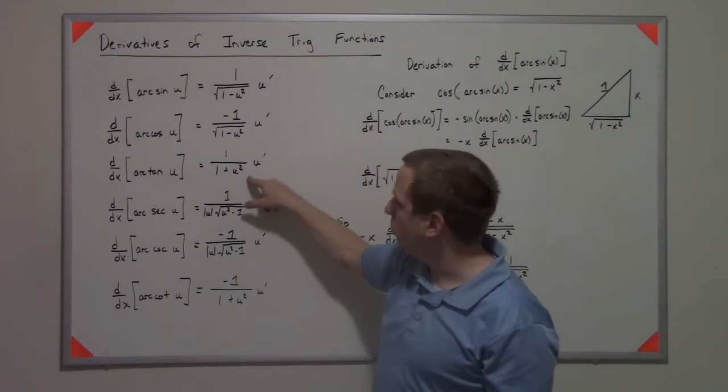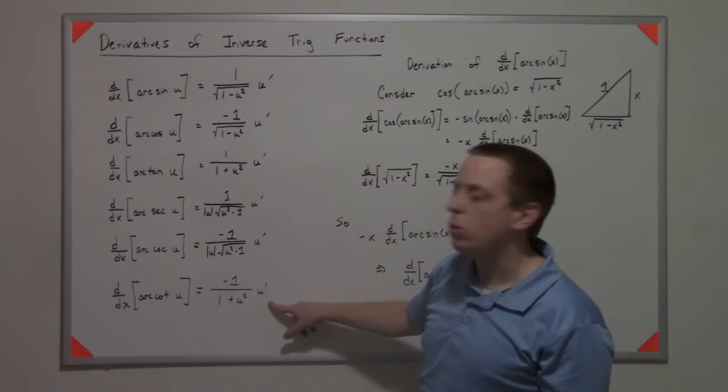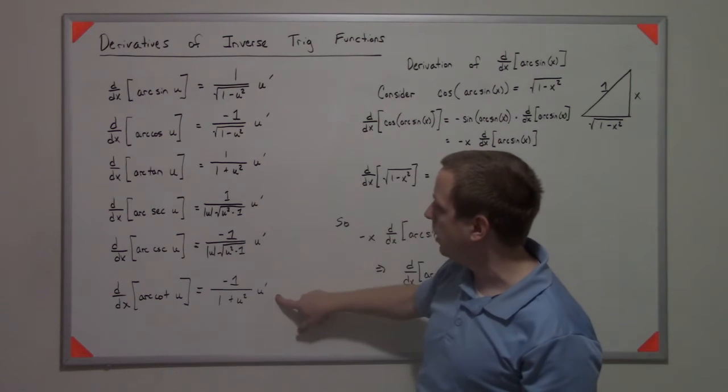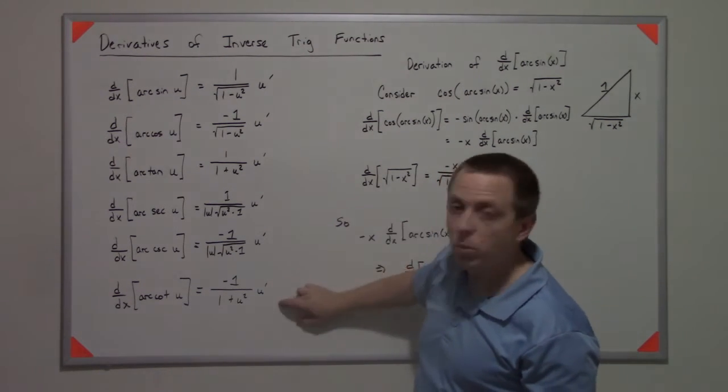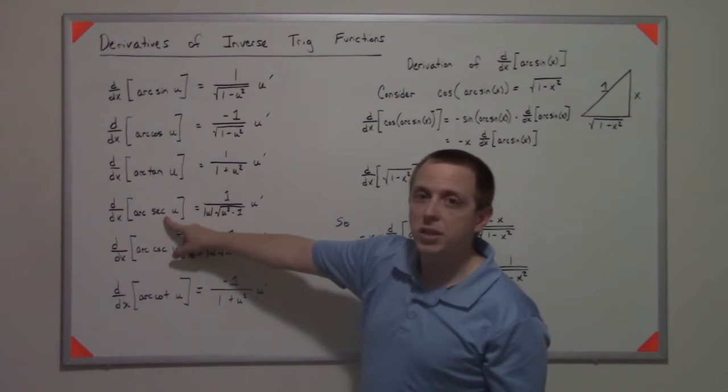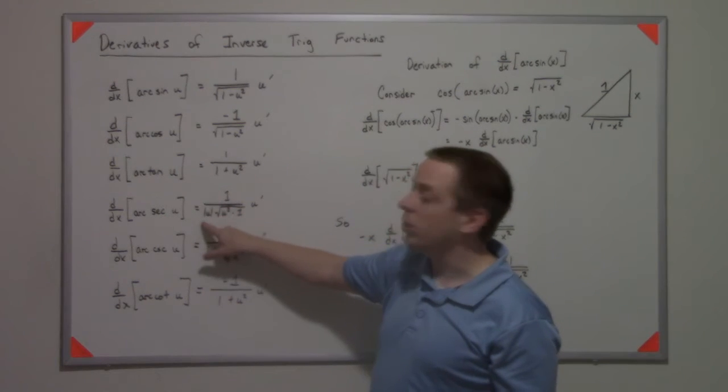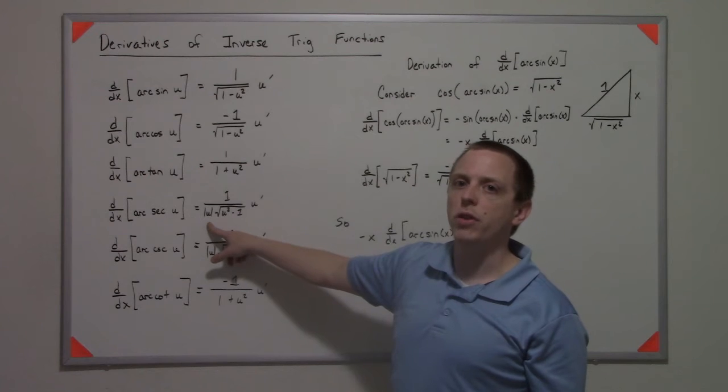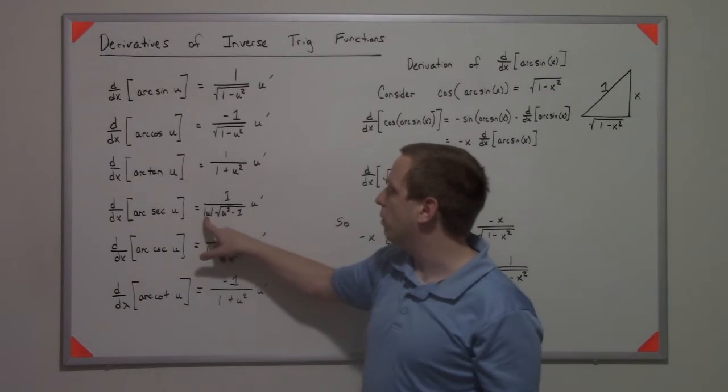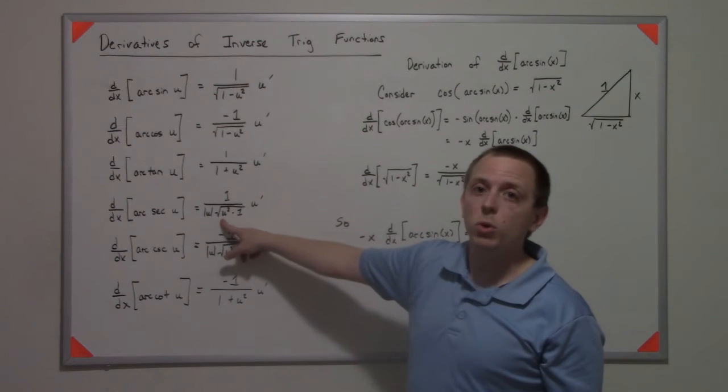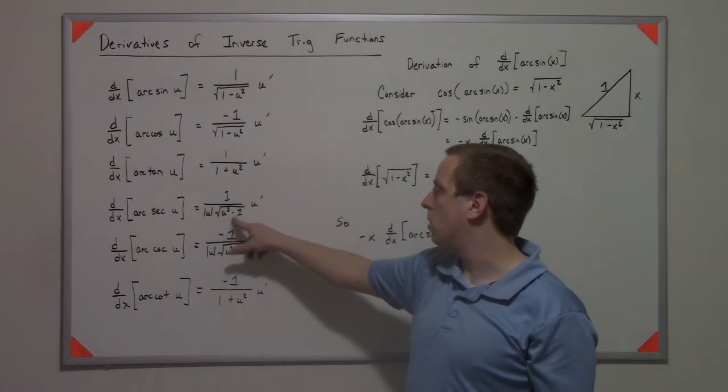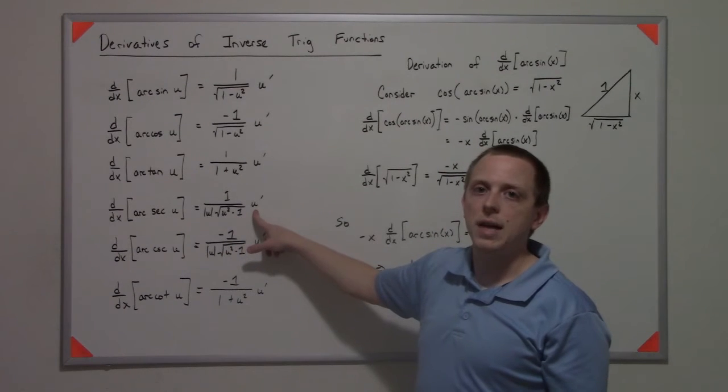The arc cotangent has a negative 1, so it's the same thing but with a negative. For arc secant, it's 1 over the absolute value of the thing that you took the derivative of, times the square root of that thing squared minus 1, times its derivative.